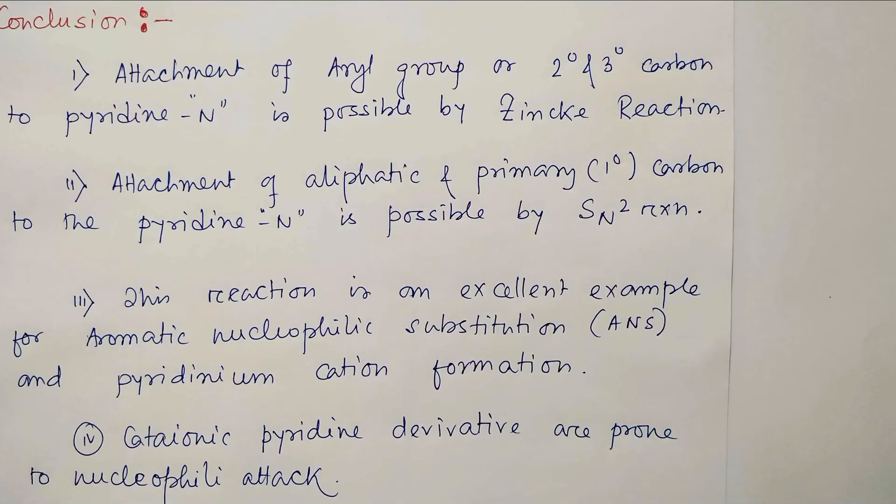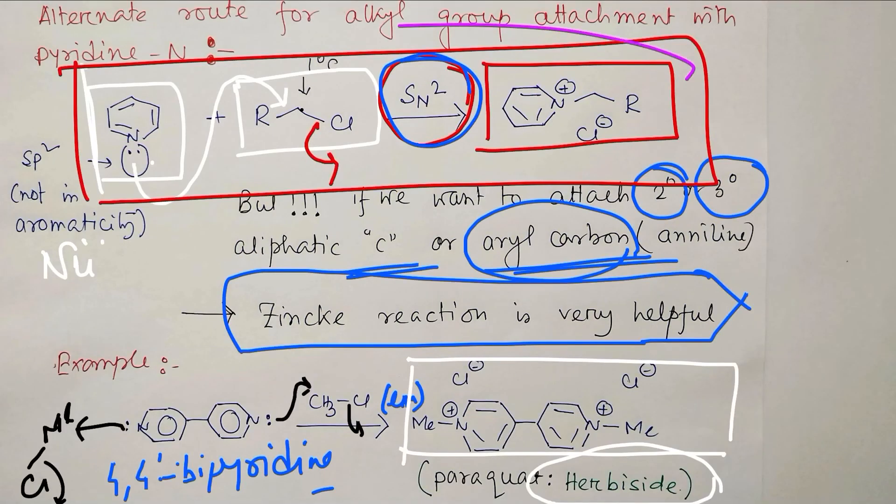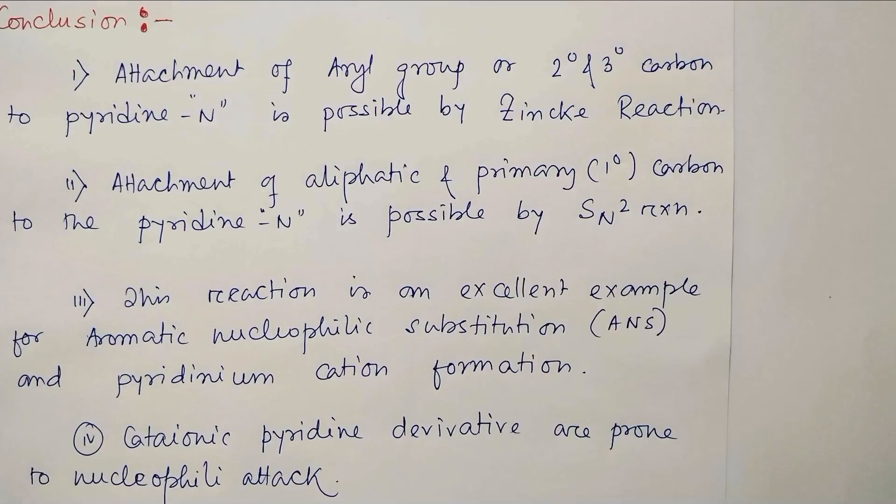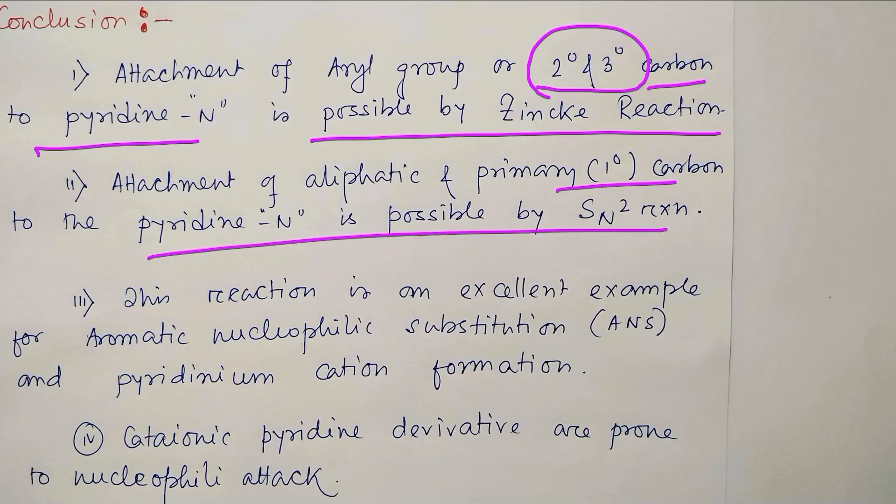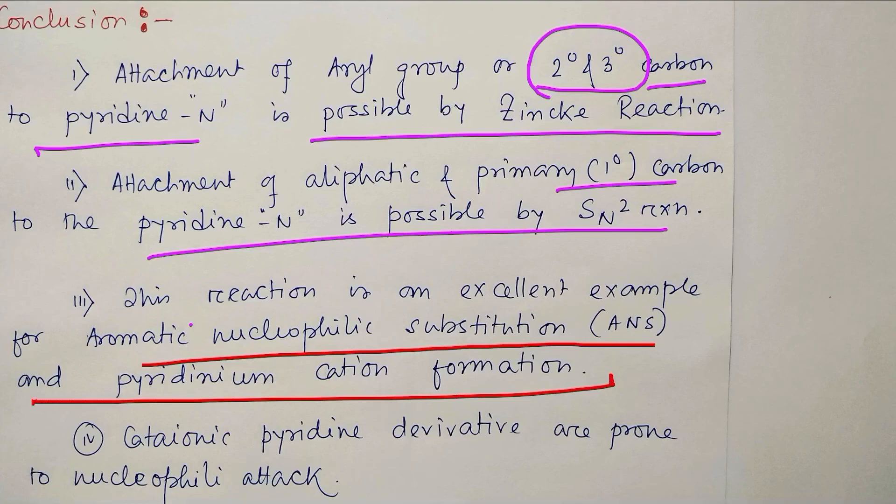So in today's discussion, what you have learned? We have learned first of all, attachment of aryl group to secondary and tertiary carbon to pyridine is possible using Zincke reaction. Why I haven't mentioned the primary? Because if anything could be achieved using an easy process, why do we follow a tedious process? In simple SN2 reaction, what I told here, this can result. That's why I have avoided the attachment of aliphatic primary carbon could be possible based on the reaction. And this Zincke reaction is an excellent example of aromatic nucleophilic substitution and pyridinium cation formation.